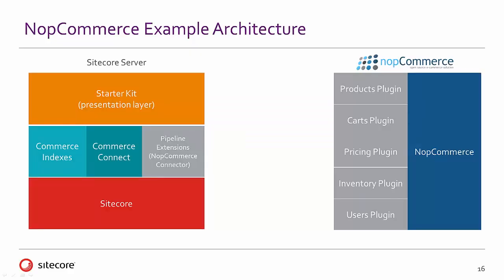Before we get into the installation itself, let's do a quick review of the example architecture covered in the overview. First, you'll be installing Sitecore 8. Next, you'll be installing Commerce Connect as a package on top of Sitecore 8. We also need to install NopCommerce 3.1 and compile a number of Visual Studio projects for each of the plugins on the NopCommerce side. Similarly, we'll be installing pipeline extensions — also known as the NopCommerce connector — on the Sitecore side, and lastly we'll be installing the starter kit itself.